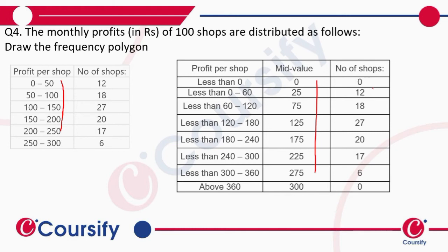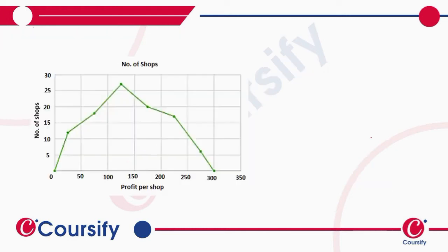When we plot them we will get a frequency polygon. A polygon is a shape with more than three sides — poly means many.